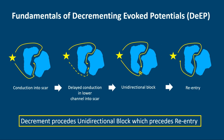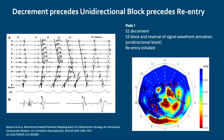Decrement precedes unidirectional block, and unidirectional block precedes re-entry. This was elegantly shown by Andrew Porter Sanchez, where poles A through K pass through a channel. At pole I, at the same coupling interval, far field then near field—the near field hasn't decremented. With a shorter coupling interval, there is considerable decrement of the near field. Then with further shortening, the signal blocks but then activates in the reverse direction—block that results in initiation of re-entry.